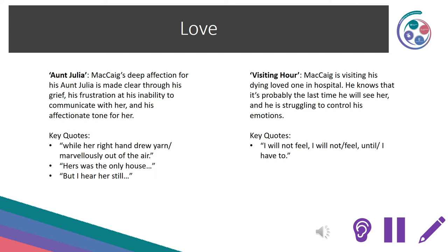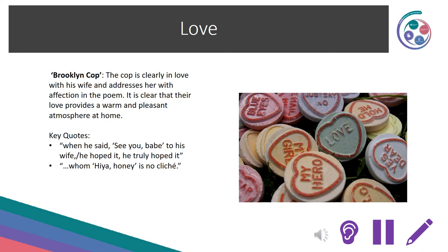The first theme is love. In Aunt Julia, McCaig's deep affection for his Aunt Julia is made clear through his grief, his frustration at his inability to communicate with her, and his affectionate tone. Key quotations include: 'While her right hand drew yarn marvellously out of the air', 'Hers was the only house', and 'But I hear her still.' In Visiting Hour, McCaig is visiting his dying loved one in hospital, likely for the last time, struggling to control his emotions — 'I will not feel, I will not feel until I have to.' Love also occurs in Brooklyn Cop, where the cop addresses his wife with affection: 'See you babe, to his wife, he hoped it, he truly hoped it' and 'Whom hiya honey is no cliché.'